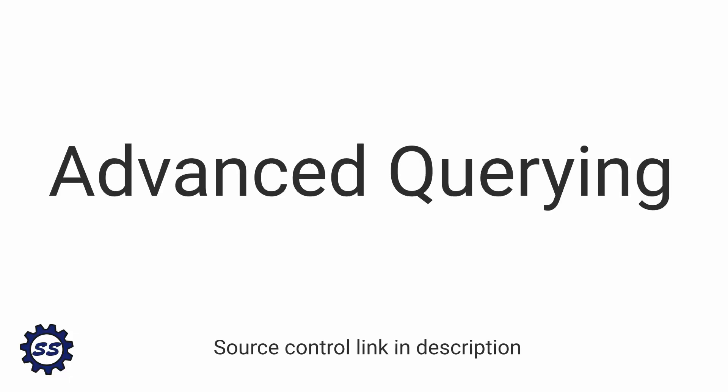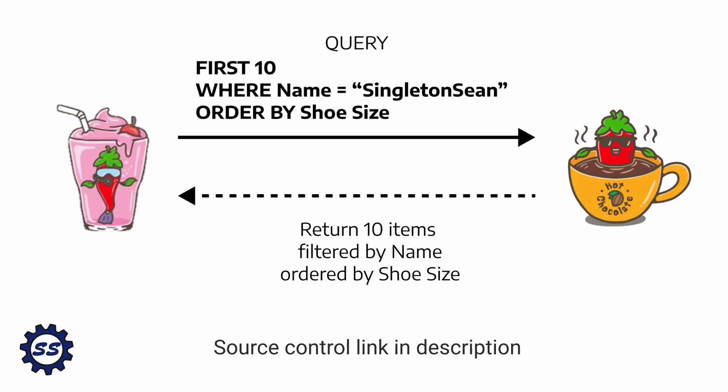Now that we've made some queries, mutations, and subscriptions, I want to get into some more advanced querying. Specifically, I want to execute queries for pagination, pass in some filtering options, and also pass in some sorting options.